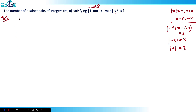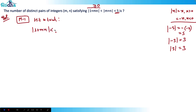I'll tell you two methods to solve this question. Method one will be hit and trial. I can do this here because the numbers are integers and I know I need to play between 0 and 5. So I'll write |1 + mn| < |m + n| < 5 and try to make a table for m and n.